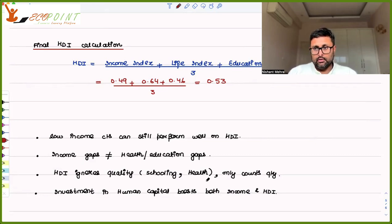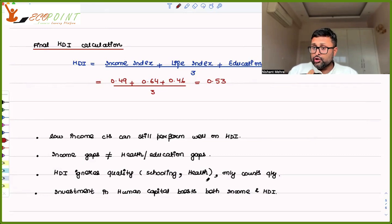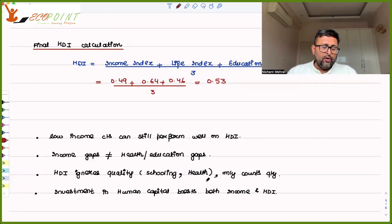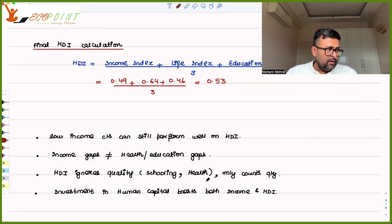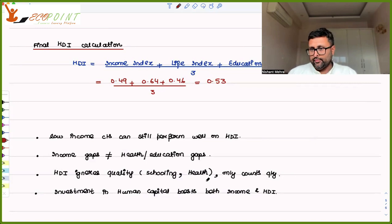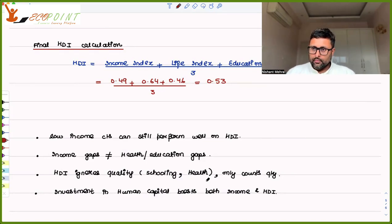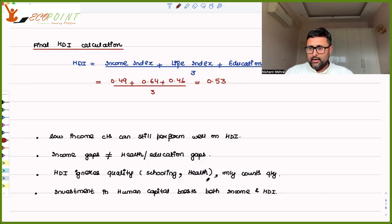This also tells you that if you invest in human capital — health and education — human development is going to improve and income will also improve as a result. One drawback of HDI is that it only takes into account quantity, not quality. For example, an extra year of life being healthy is not the same as an extra year of life being ill, but HDI does not capture this difference.